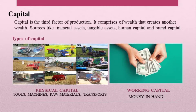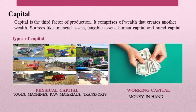Capital is the wealth that creates another wealth — like financial assets, tangible assets, human capital, and brand capital. Financial assets are intangible assets such as bank balances and bonds. Tangible assets have a physical appearance like buildings, machinery, equipment, tools, and raw materials. Human capital refers to skilled, qualified, and educated laborers. Brand capital means a company's logo, pride, or goodwill.